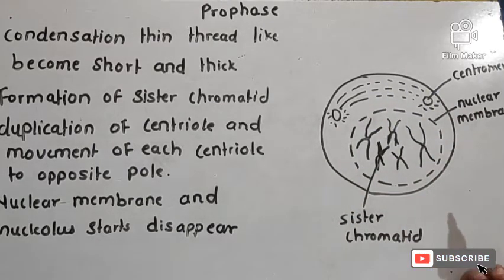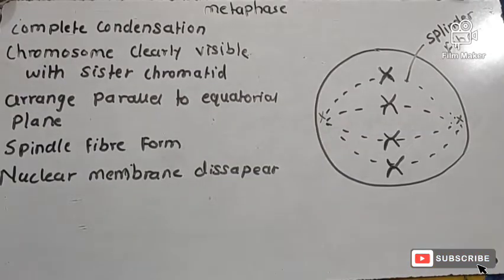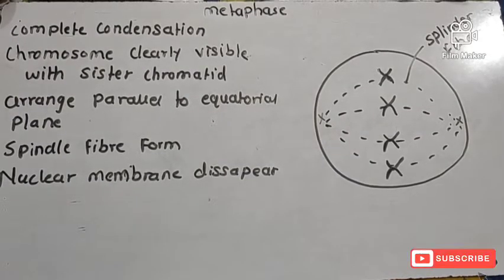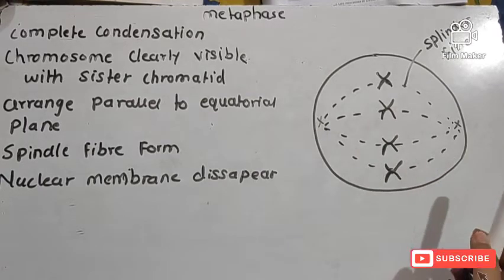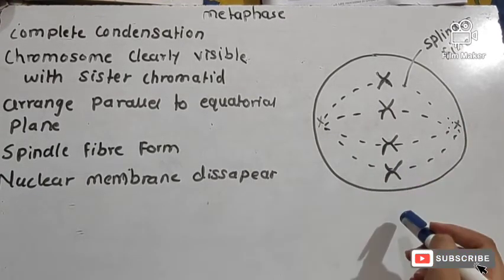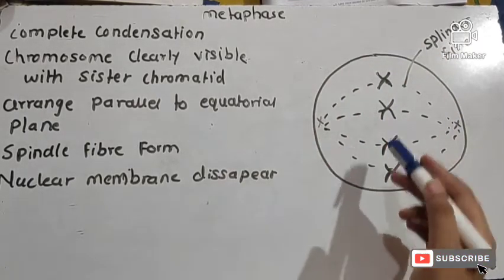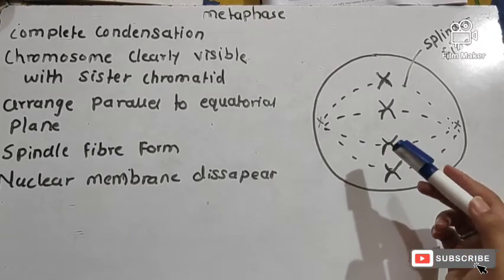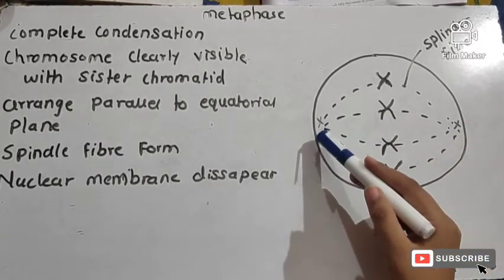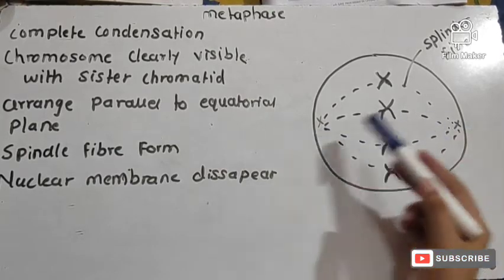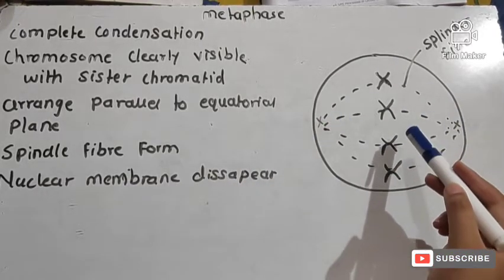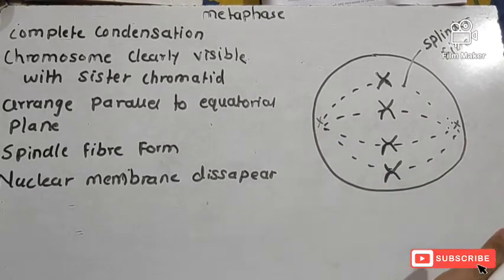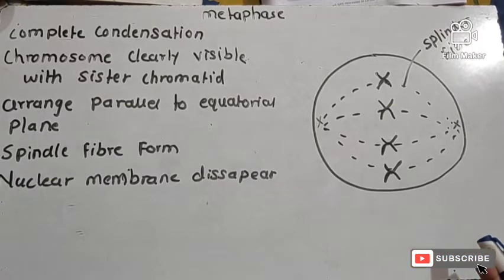In metaphase, complete condensation of chromosomes occurs and they become clearly visible along with the sister chromatids. The chromosomes are arranged parallel to the equatorial plane. The chromatids are on opposite poles and form spindle-like structures or spindle fibers between the chromosomes and centromeres. The nuclear membrane is completely disappeared.